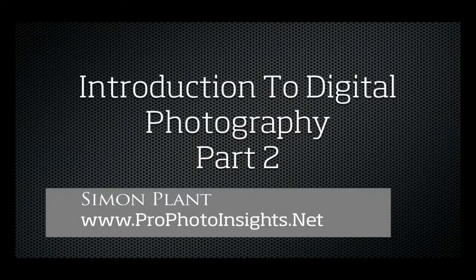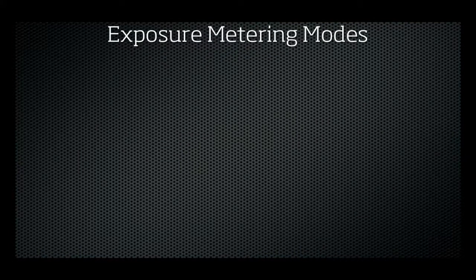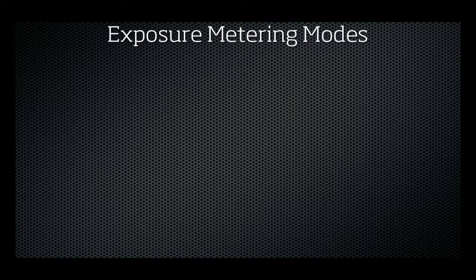Welcome back. This is Part 2 of our introduction to digital photography, and in this episode we're going to be looking at metering and exposure. Metering is how your camera determines what the correct shutter speed and aperture should be, depending on the amount of light that goes into the camera and the sensitivity of the sensor.